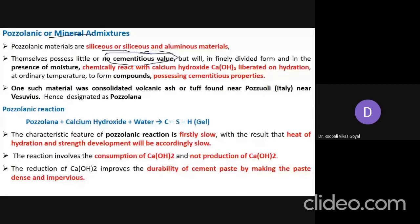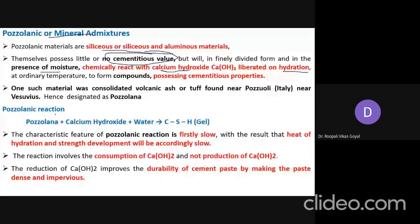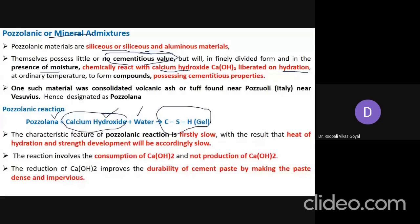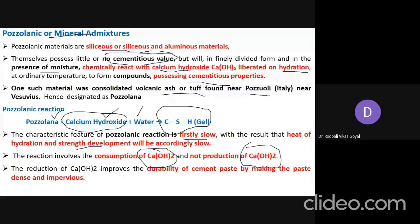When talking about pozzolanic or mineral admixtures, they are siliceous or aluminous materials. Basically, they don't have binding properties — no cementitious value on their own. But in finely divided form, in the presence of moisture, they react with calcium hydroxide (Ca(OH)₂) liberated during hydration to form a product possessing cementitious properties. They react very slowly initially, so heat of hydration and strength development are accordingly slow. They consume Ca(OH)₂ rather than produce it, which improves the durability of concrete by making the paste dense and impervious.